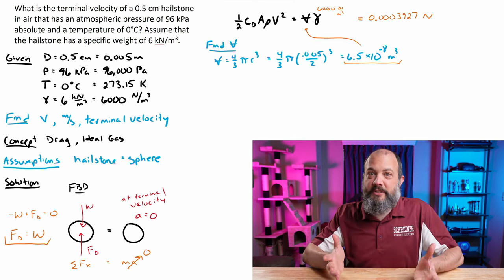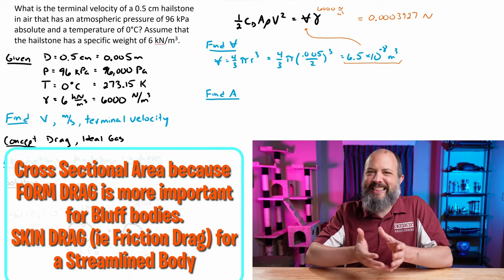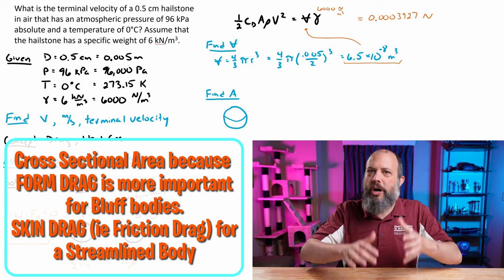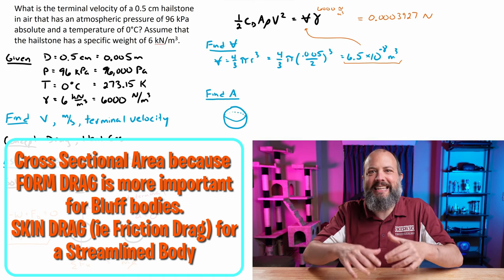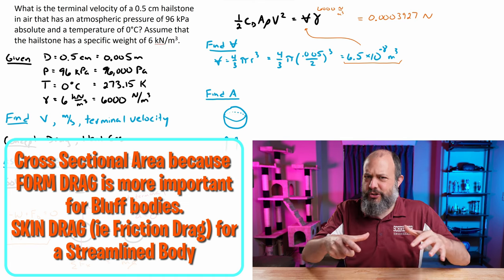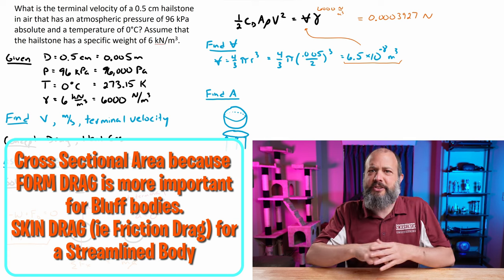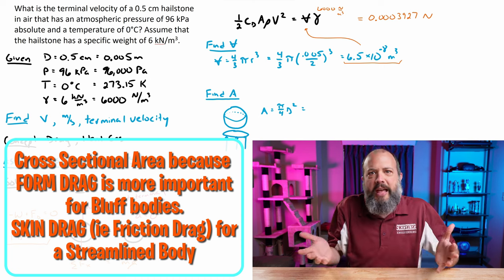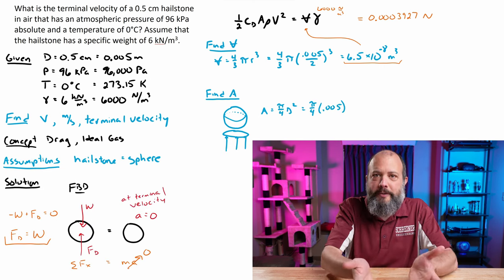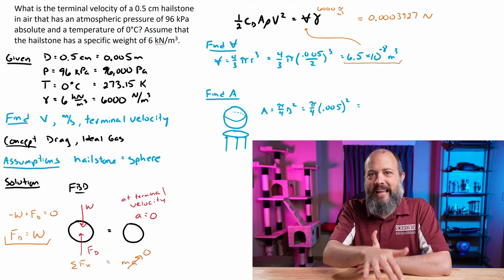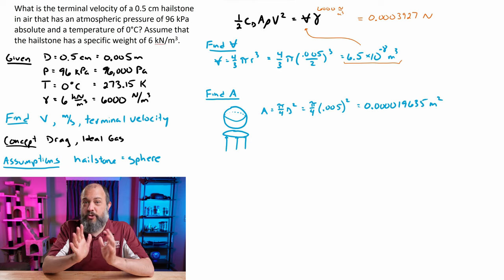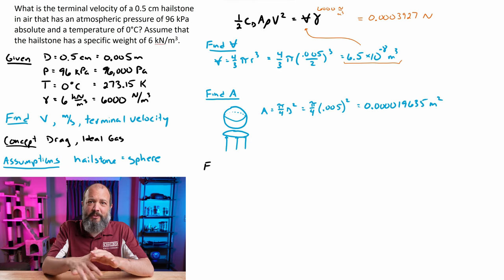This spherical assumption also helps us find area. The area is not the entire surface area of the sphere. It's just the cross-sectional area that the wind sees. So it's just sort of the fattest area, essentially represents the area of a circle that is the equator of the hailstone, since that would be the widest part. Area equals pi over four, diameter squared, or just pi r squared, making 0.0000196 meters squared. So we're probably done with the easy parts for this problem.